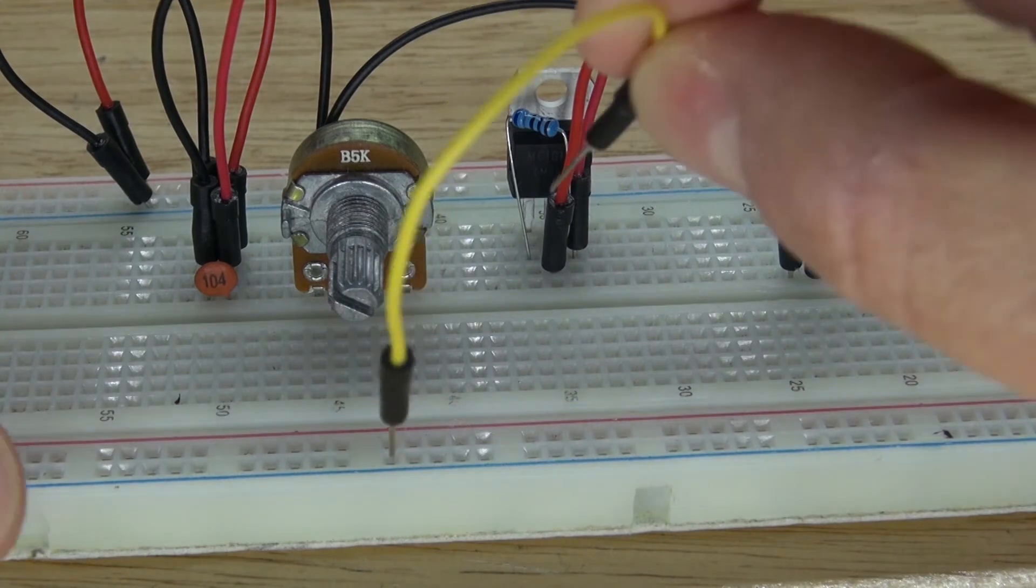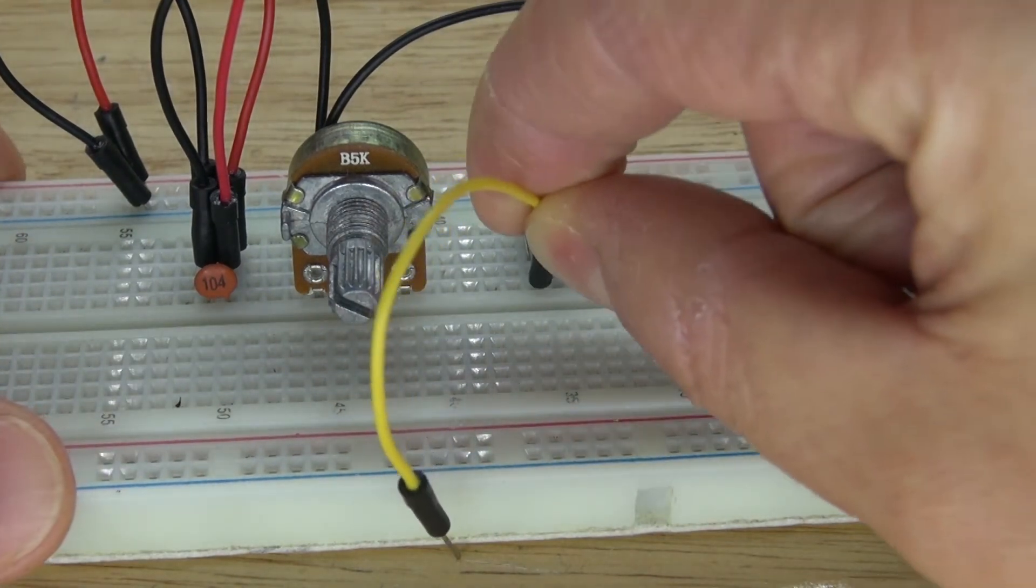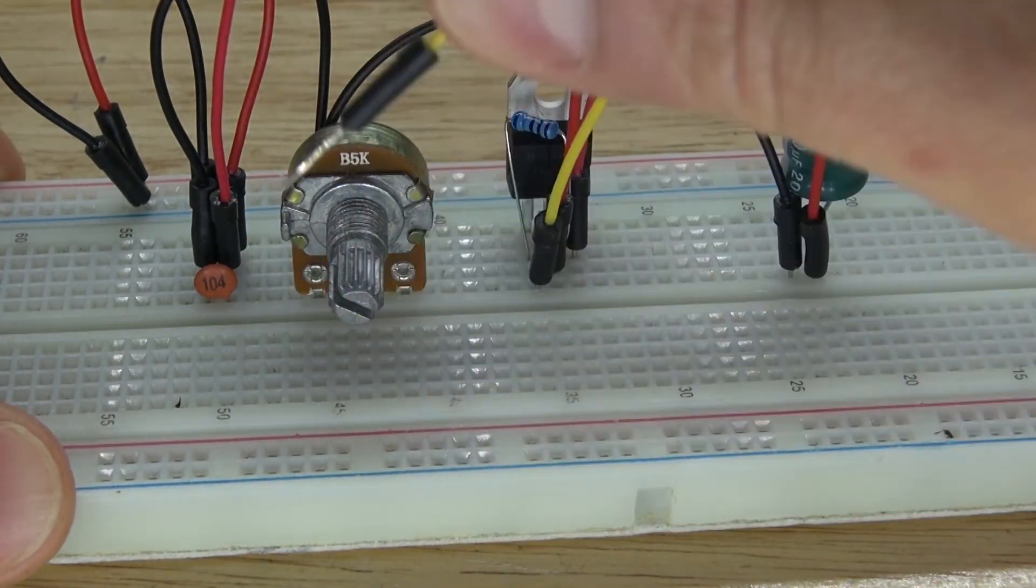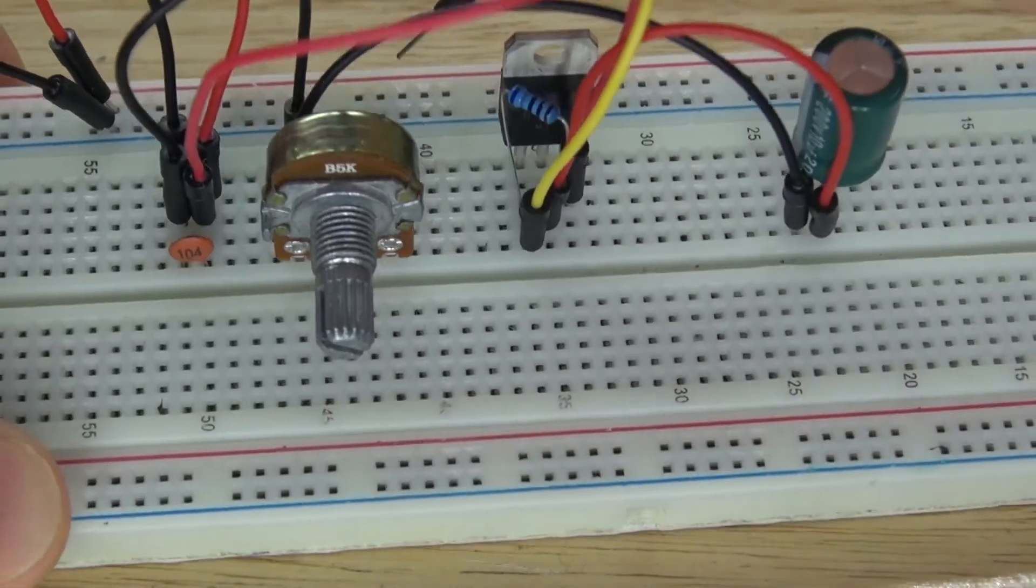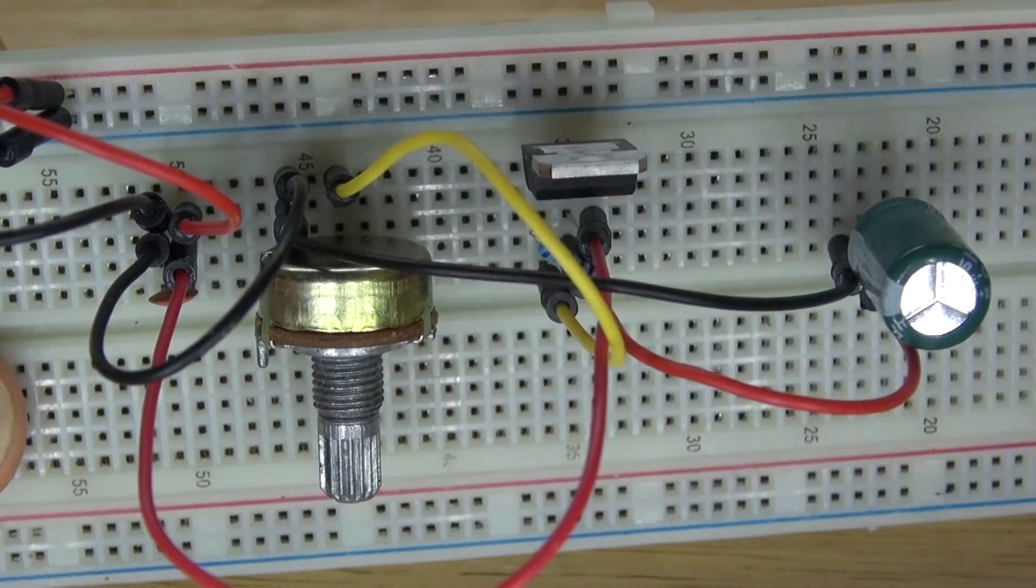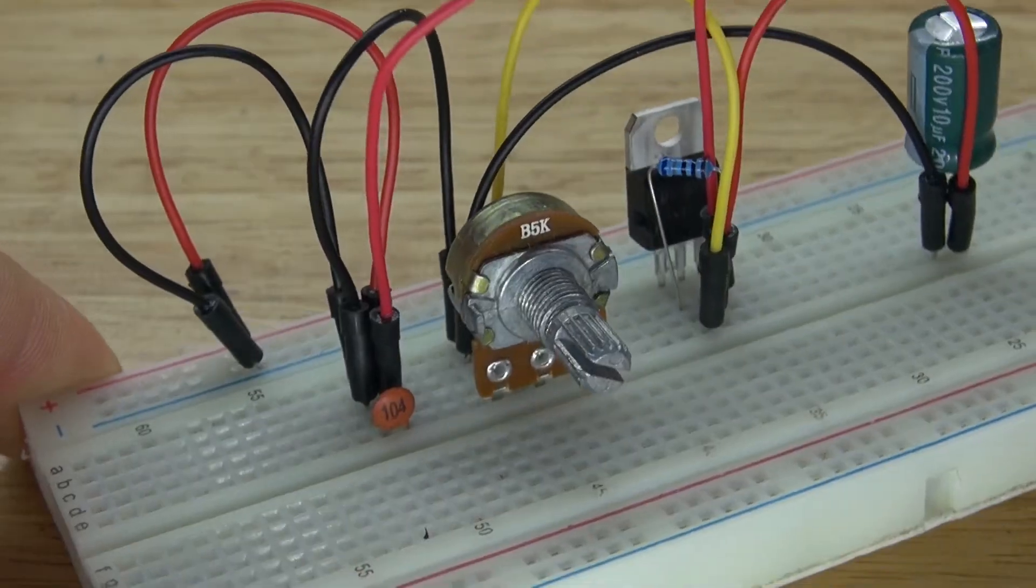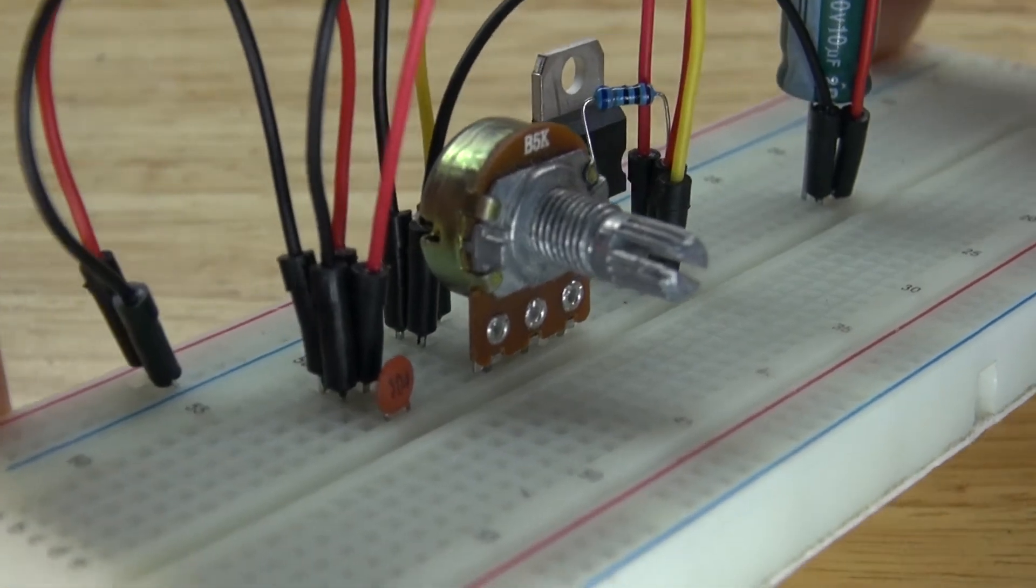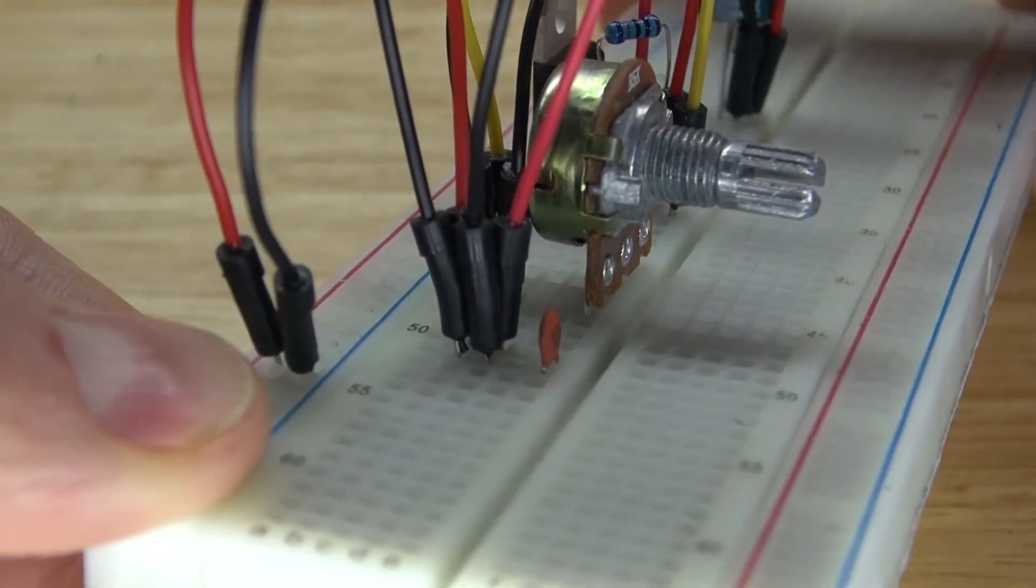Next, I'm going to take a yellow jumper wire, and I'm going to connect the adjust pin on the transistor and connect that to the center pin of my potentiometer. There we go. Just like this. And there you have it. It should look just like this.